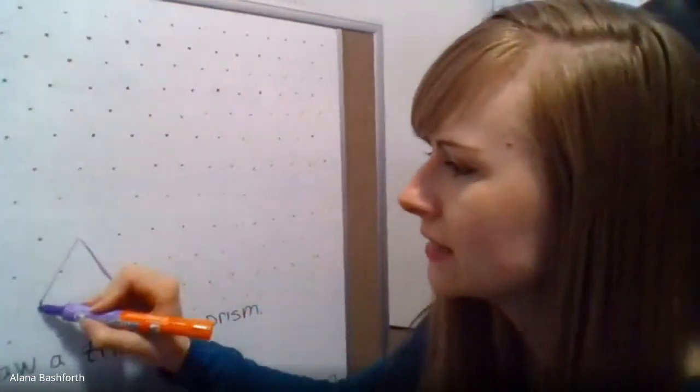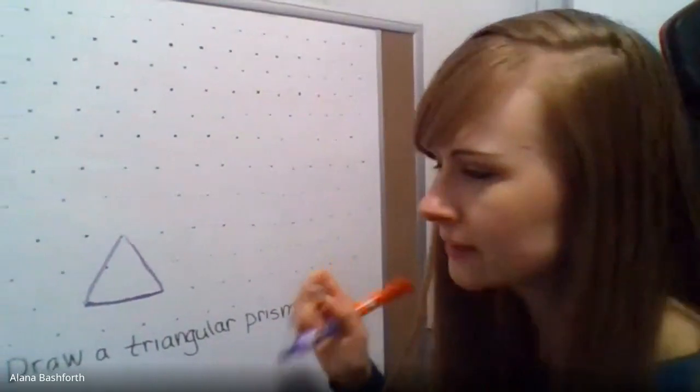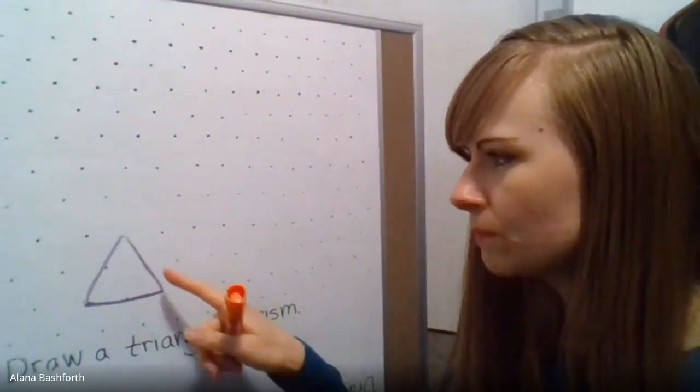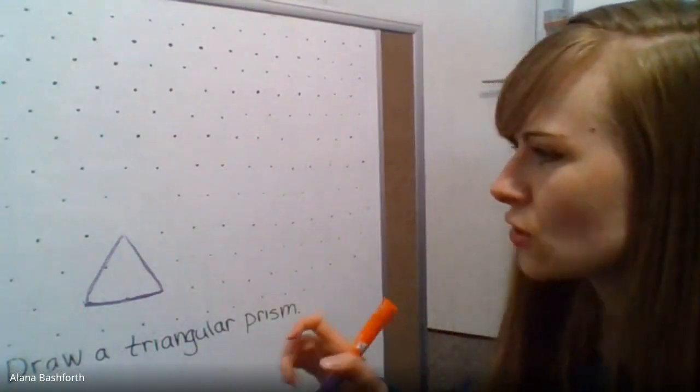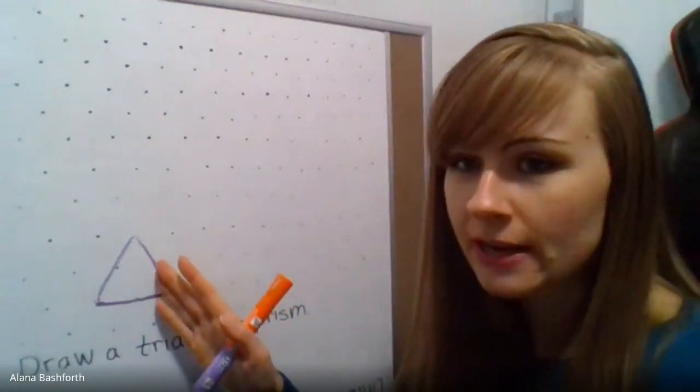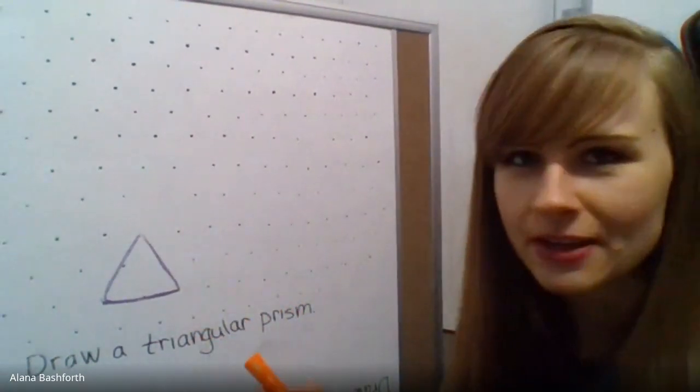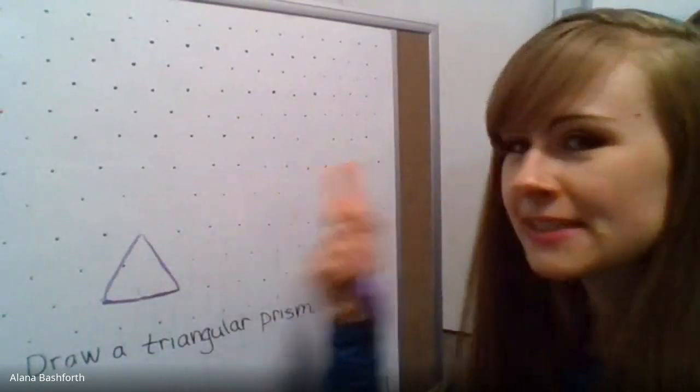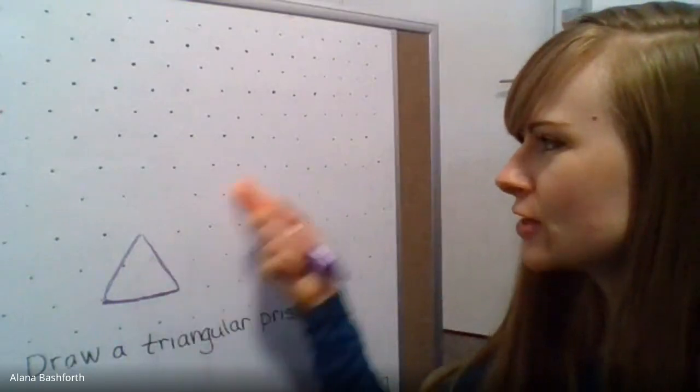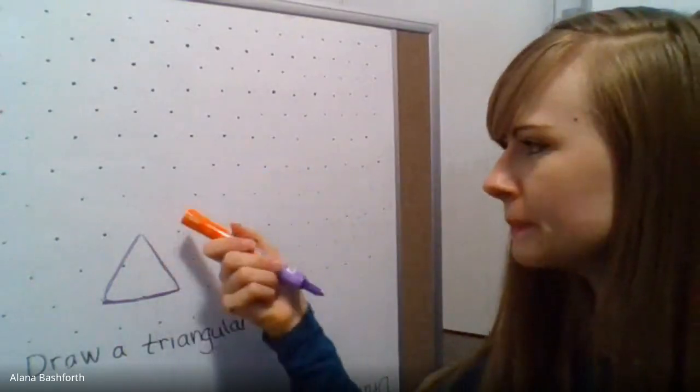So now I've made one triangle, and it goes one, two, one, two, three, one, two, three, one, two, three - it has three dots for each line. Wherever I put my other triangle has to be exactly the same size but in a different spot. We just pick a different spot - we want to go up some and over some.